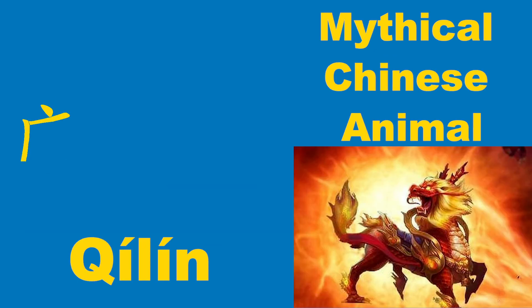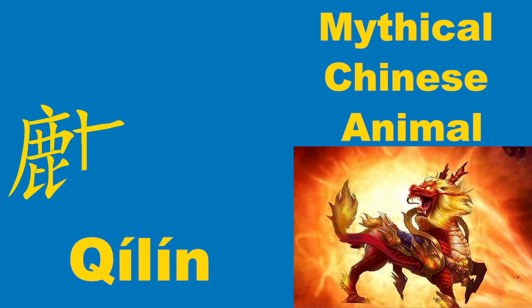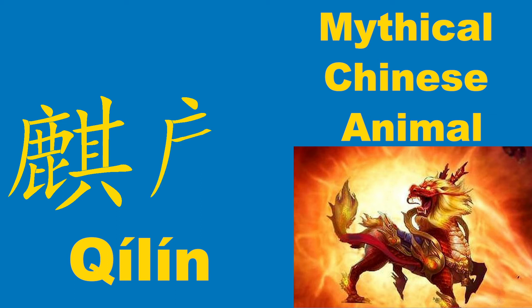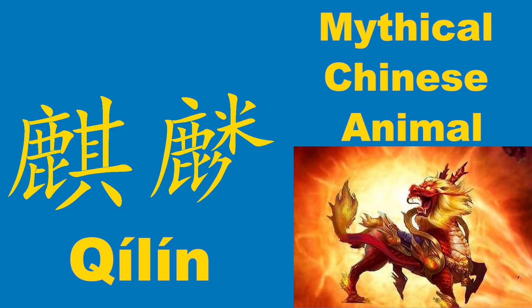This one is called qilin. It means magical Chinese animal. Actually, there is a very famous Chinese celebrity — his name is Guo Qilin. Qilin is like a magical Chinese animal.